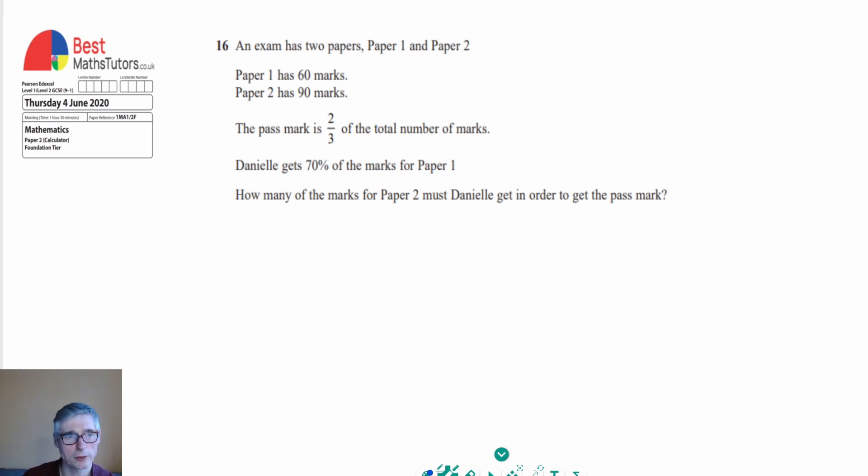So I think the first thing that I would do there is just work out what the total number of marks is available. That's just saying 60 plus 90, and that's 150. So then we know that the pass mark is actually two-thirds of this total. What I would do is just work out what is two-thirds of 150. And two-thirds of 150 is actually two-thirds times 150.